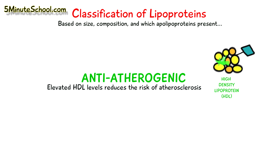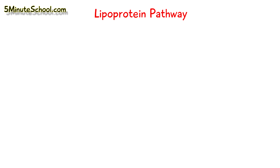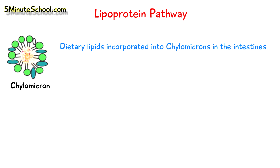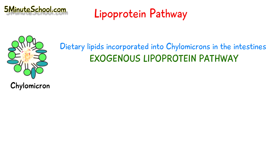When we look at how the lipoprotein pathway occurs, it starts with dietary fats being incorporated into chylomicrons in the intestines. This is known as the exogenous lipoprotein pathway, because the source of the fat is coming from outside the body — it's coming from the food that we eat.